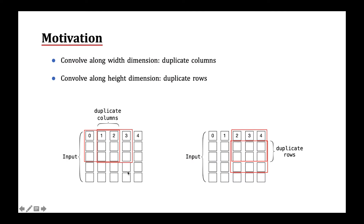We closely examine the process of convolution and find two opportunities to reduce memory transactions. First, when convolving along the width dimension, there are overlapped columns between different sub-blocks of input — two columns are overlapped between different sub-blocks. Once we slide the kernel along the height dimension, two rows are overlapped. Based on both observations, we designed two reuse techniques named column reuse and row reuse.